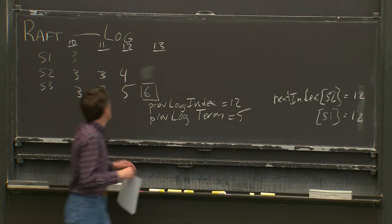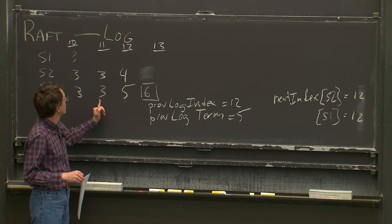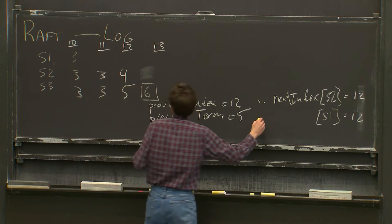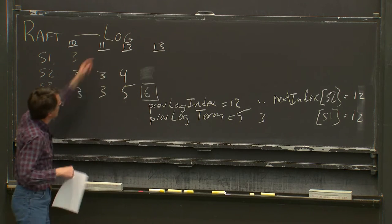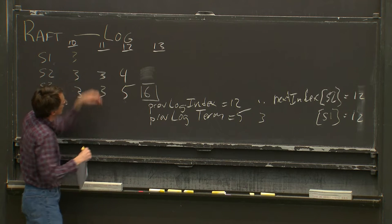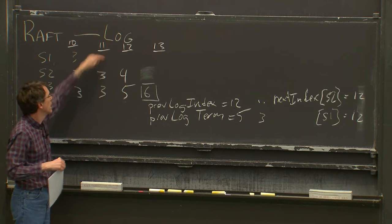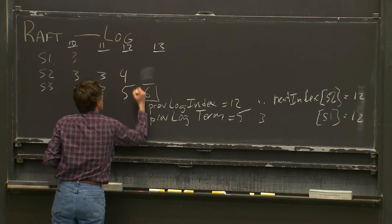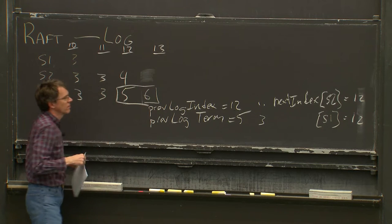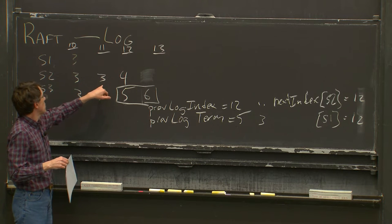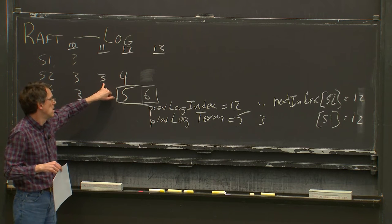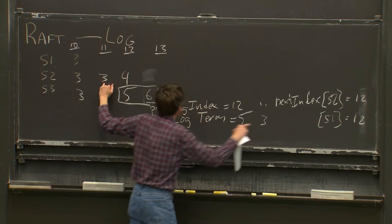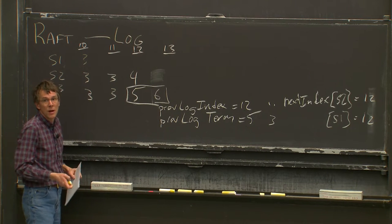The leader decrements to 12 and resends. This time the AppendEntries has previous log index equals 11 and previous log term equals 3. This new AppendEntries has a different previous log index, and the log entries it sends out include all entries after the new previous log index. Server 2 looks at previous log index 11, sees the term is 3 — same as what the leader is sending — so server 2 is actually going to accept this AppendEntries.